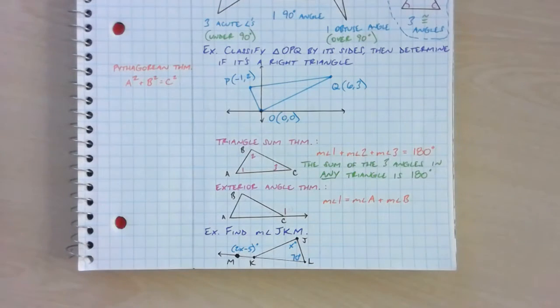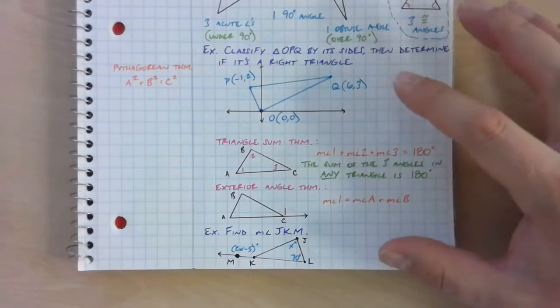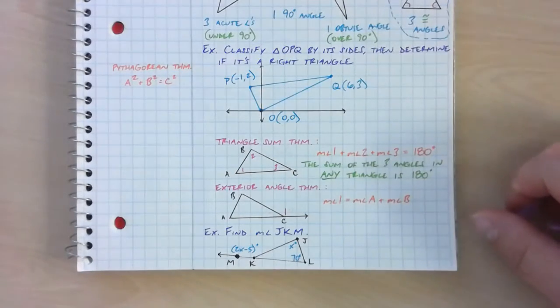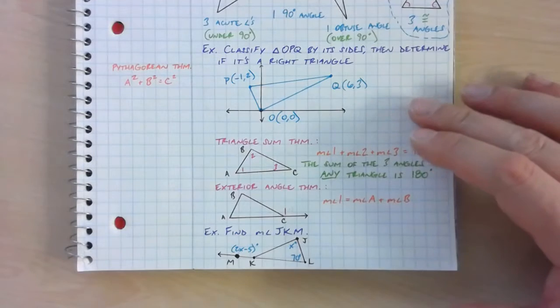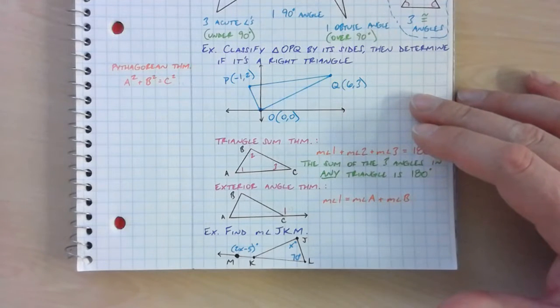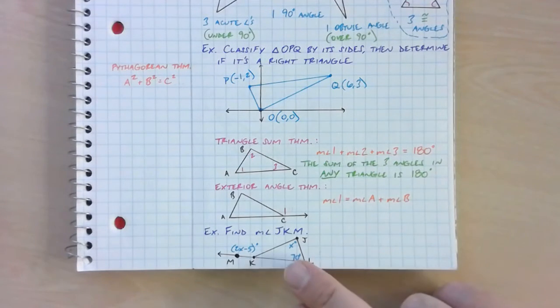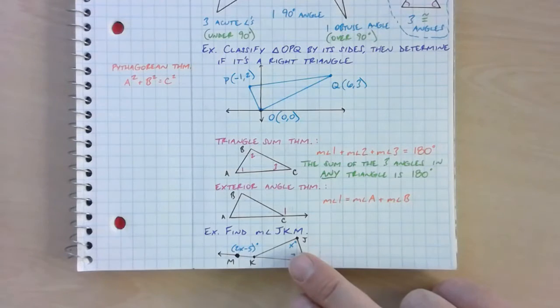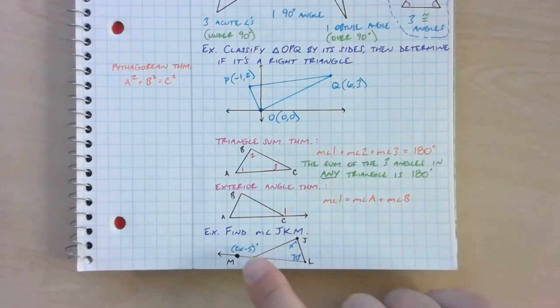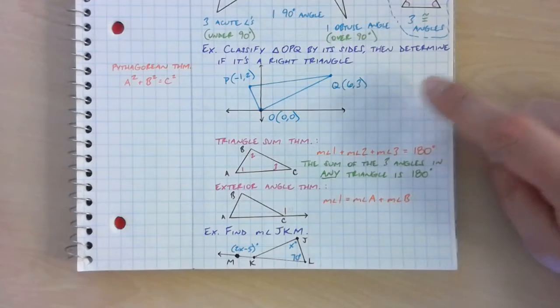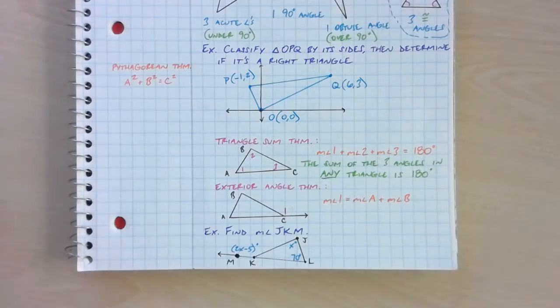All right, we're still in Chapter 12, Section 1, Angles of Triangles, and these are the two examples we're going to attack in today's video. We're going to first talk about how to classify a triangle that's just given to us on a coordinate grid, and then we're going to deal with this exterior angle problem down here. This one will be pretty quick. We're going to spend the bulk of our time on this one, so let's jump to our whiteboard.